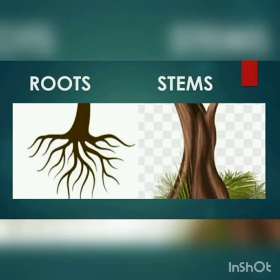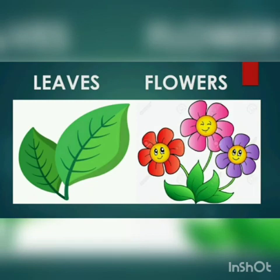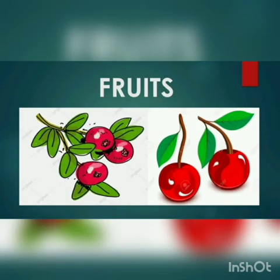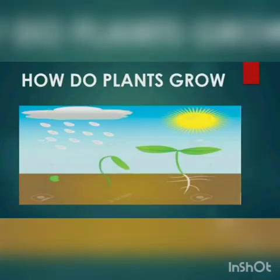Stem keeps the plant straight. Leaves grow on the branches of the tree and they make food for the plant. Flowers have fragrance and seeds in them. Fruits grow with the seeds present in the flowers, and fruits also have seeds in them. Do you know how plants grow? Plants grow from seeds. They grow with the help of water, air and proper sunlight.